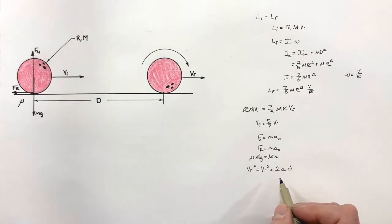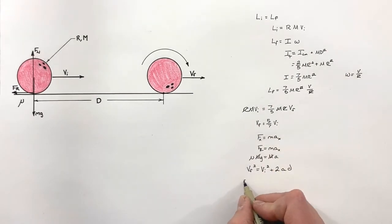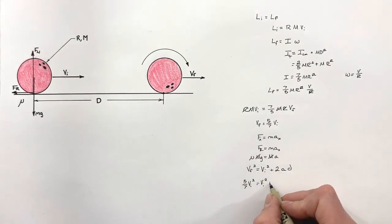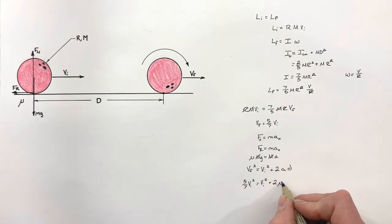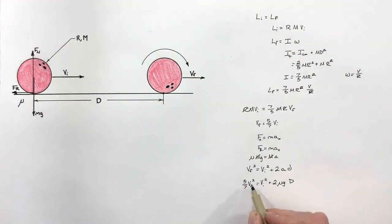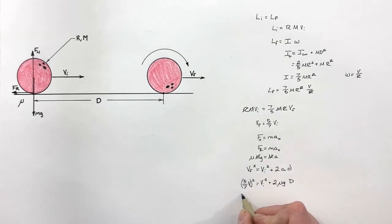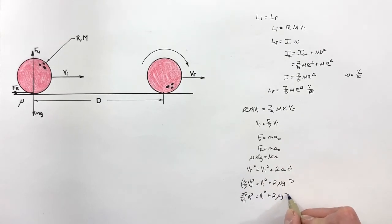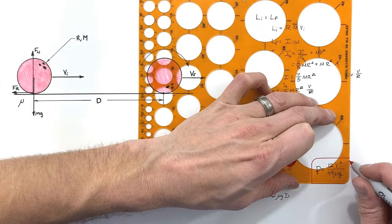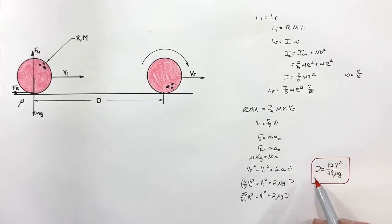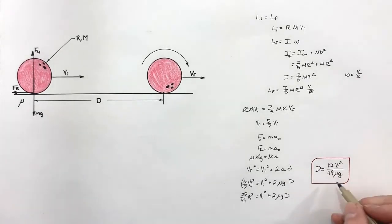Substituting in our values — v_final = (5/7)·v_i, acceleration a = mu·g, and displacement d — we get (5/7)²·v_i² = v_i² + 2·mu·g·d. Note that (5/7)² = 25/49. Moving terms over, we arrive at an expression for the skid distance d as a function of the initial velocity v_i, the kinetic coefficient of friction mu, and g. This is kinetic friction throughout since the ball is sliding the entire time.